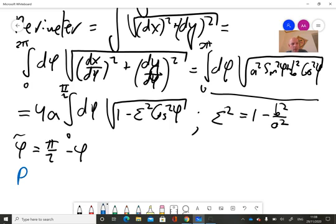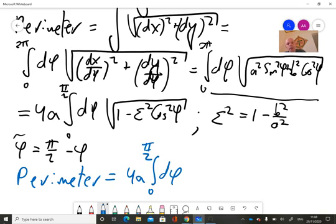And then the perimeter takes the following nice form. The perimeter is 4a, the integral between zero and pi over two of d phi tilde square root of one minus epsilon squared sine squared phi tilde.